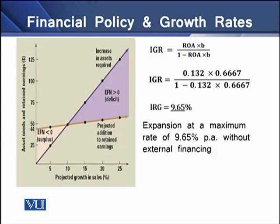On the screen, you can see the internal growth rate model. There are two variables used in this model: ROA and B. ROA is Return on Assets and B is the Retention ratio. The computed internal growth rate is 9.65%. This growth rate means that the firm doesn't need any type of external financing, and each year the firm can grow at 9.65%.